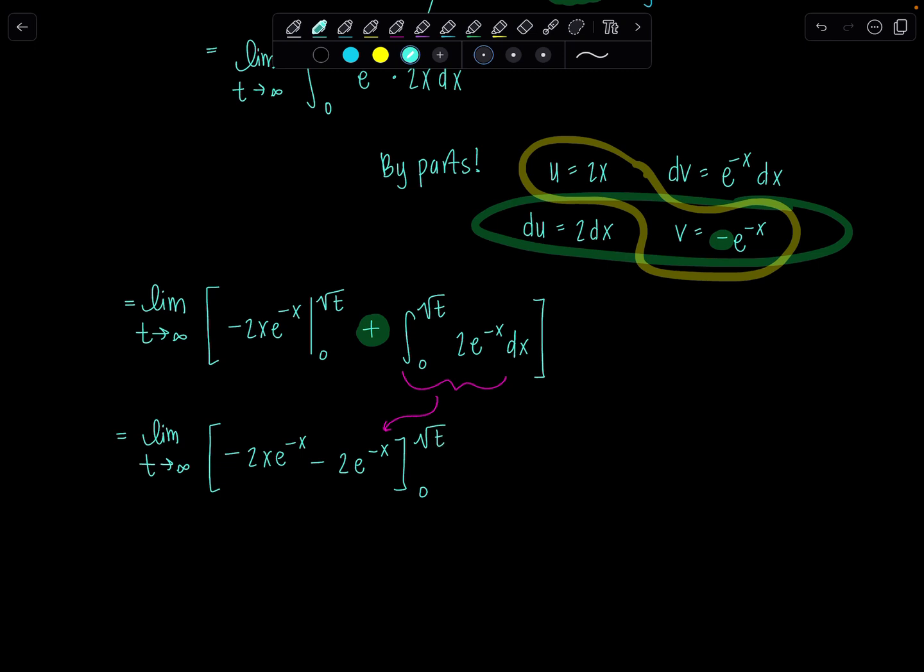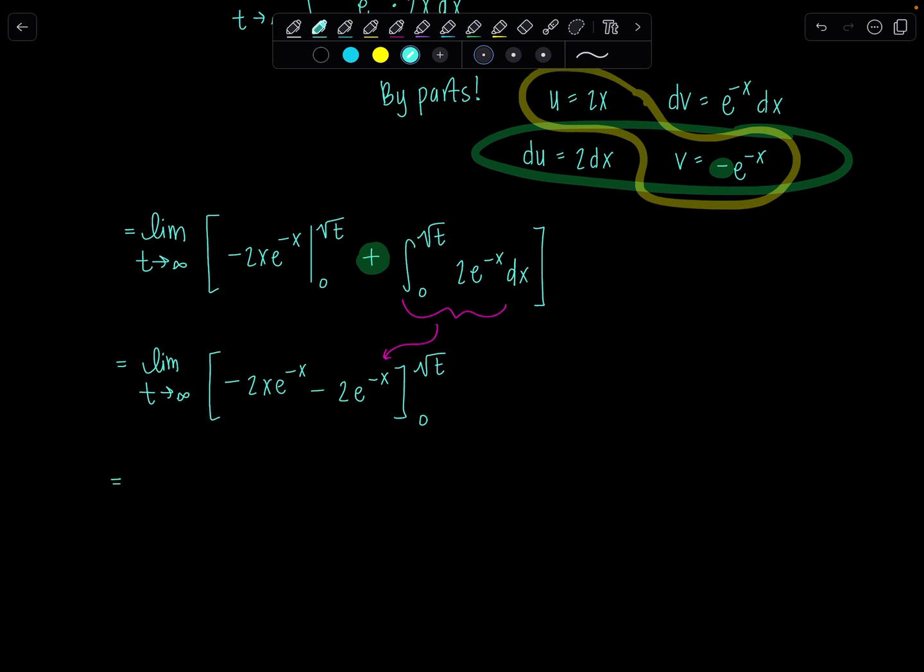Just a couple things to clean it up before we start evaluating. I want to take out the 2 that both of them have in common. And then also I don't love that these are both negative. I can make them both positive if I flip the limits of integration. You don't have to do this, but it's just going to be a little nicer to not have so many minus signs floating around on the paper. So I'm taking the 2 out and then now everybody's positive: xe to the negative x plus e to the negative x. But these guys flip, so 0 is now my upper limit, rad t is the lower limit.